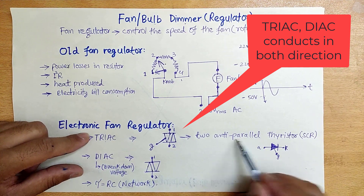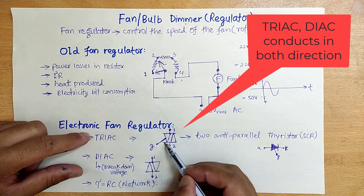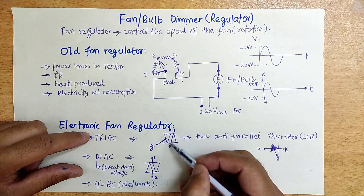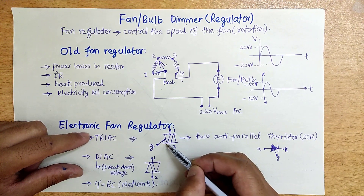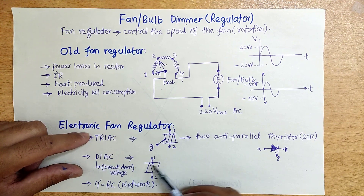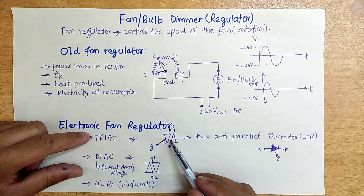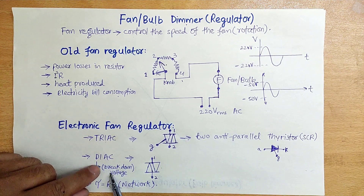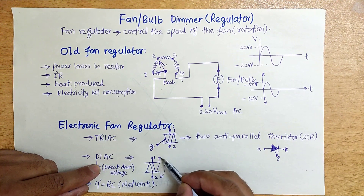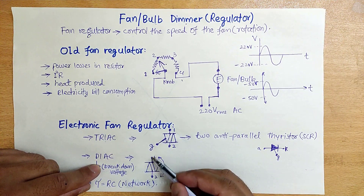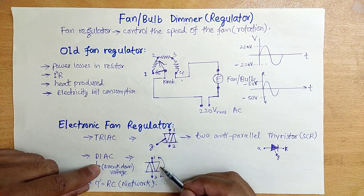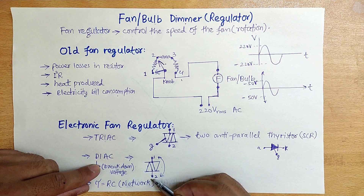A TRIAC is formed by connecting two thyristors anti-parallel. It has two main terminals connected in the circuit and a gate signal which triggers it. A DIAC is similar to a TRIAC but has no gate trigger signal — it has just a breakdown voltage. If the voltage across the DIAC reaches its breakdown voltage, for example 12 volts, the DIAC will turn on and current will pass through it.